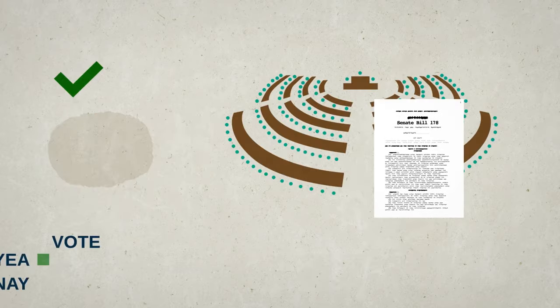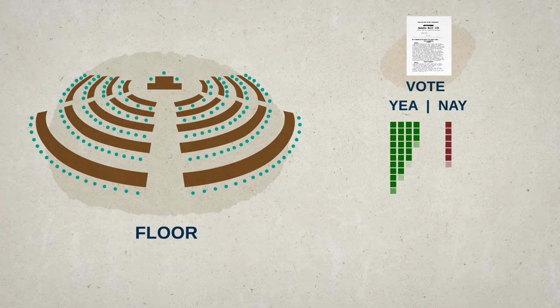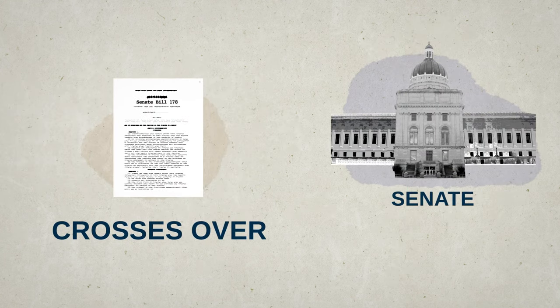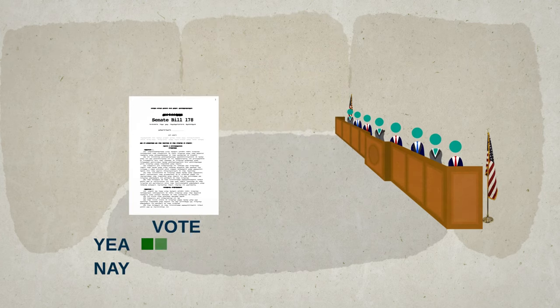After the hearing, the committee members vote on the bill. If it passes, the bill goes to the floor, which means all of the members in the chamber vote on it. If the bill passes the House, it crosses over to the Senate, or vice versa, and we do the whole thing again. Another hearing, more witnesses, another vote.